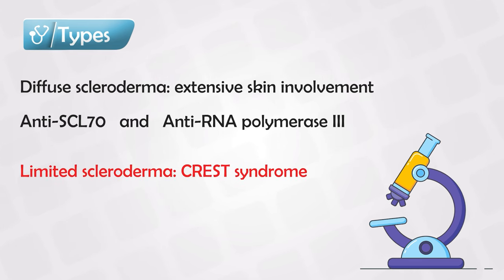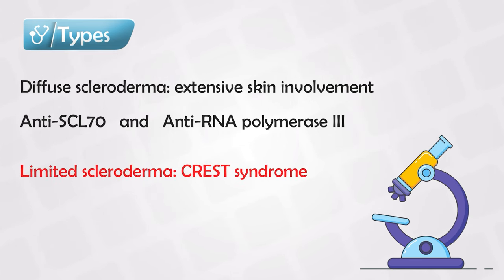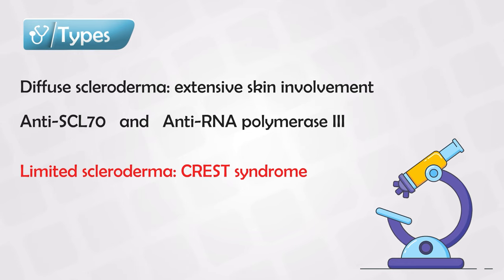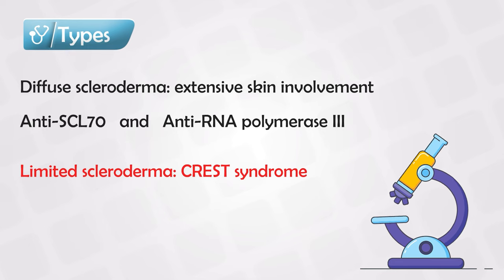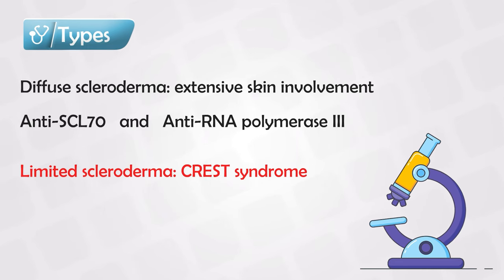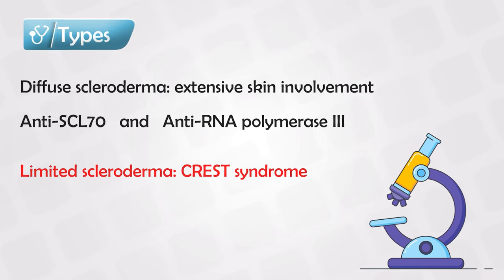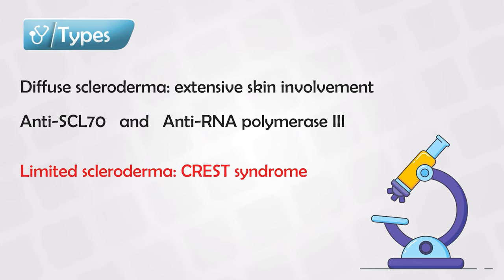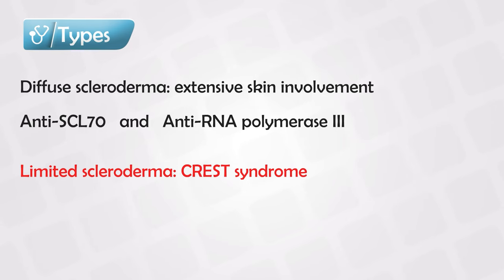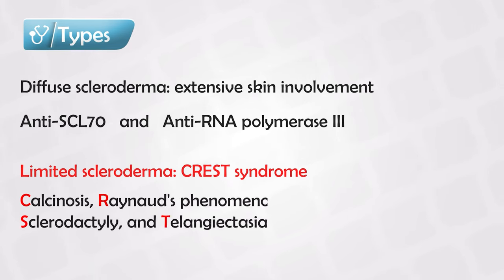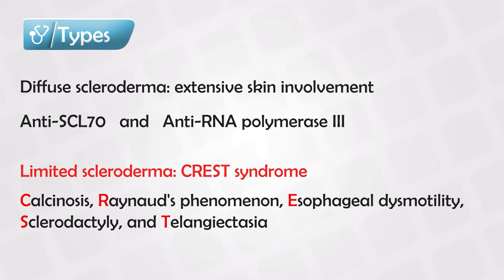Limited scleroderma involves mainly the face and the fingers or hands. It also involves intra-abdominal structures, but the symptoms are much milder than the diffuse type. The presentation is more benign and the prognosis is much better. It is also known as CREST syndrome: Calcinosis, anti-Centromere antibodies, Raynaud's phenomena, Esophageal dysmotility, Sclerodactyly, and Telangiectasia.